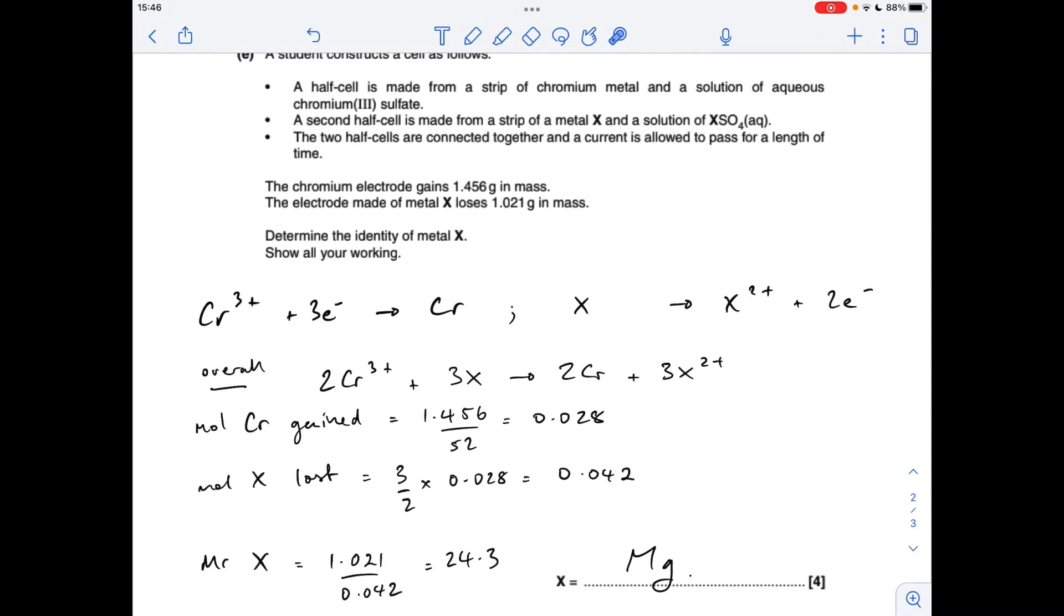So now we know the mass of X that's been lost, we know how many moles that was, we can work out the Mr. Mass over moles, 24.3, so X must be magnesium.